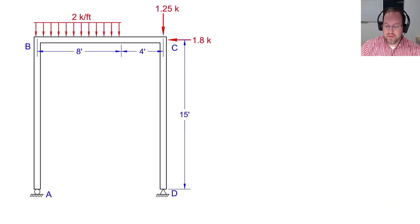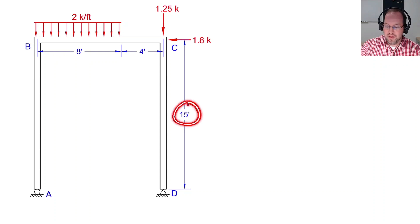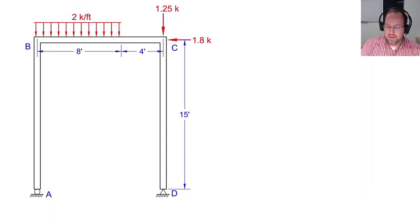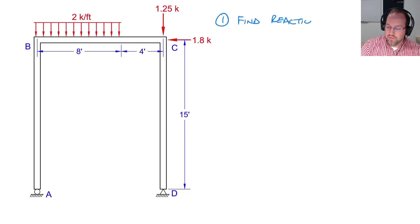Our problem for today will be this simple frame. It's going to be 15 feet high and 12 feet long. We have a distributed load and two point loads. The point loads are both located at point C. The first thing we'll do is find our reaction forces, and after that we will solve for our internal forces in both columns and the beam.